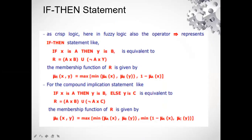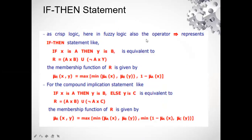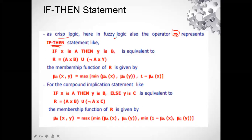In crisp logic, whenever we have an operator called implication — this is the sign of implication — it represents the if-then statement. The implication operator simply means or represents the if-then statement. It is the same in crisp logic and in fuzzy logic. So whatever we are doing in crisp logic, fuzzy logic has the same concept of implication. Now we are going to understand how we develop a relation between two variables using the implication operator.